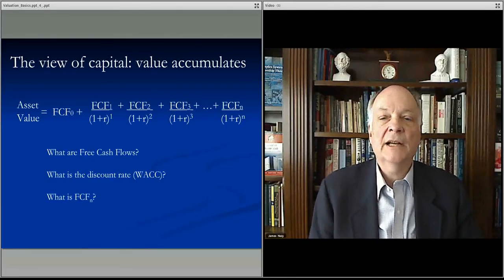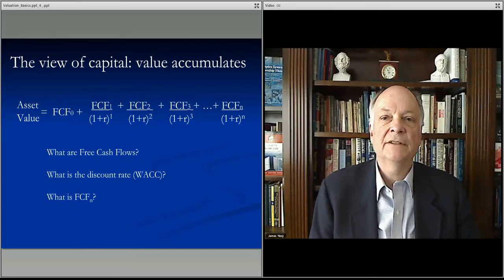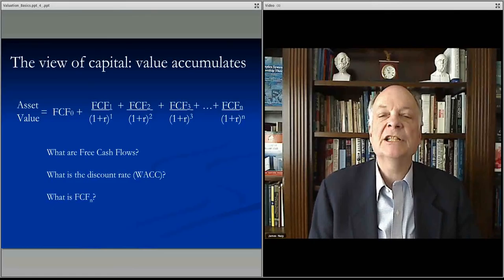You have to buy a truck, whatever it is you have to do, that $500,000 or $200,000 is free cash flow zero. You pay that at the very beginning and it's generally an outflow or a negative number.